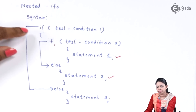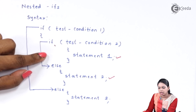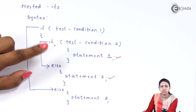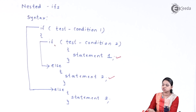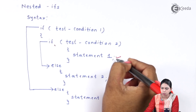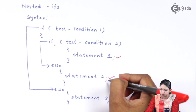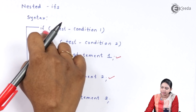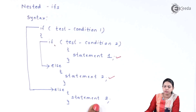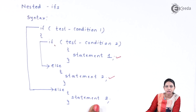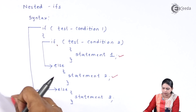To repeat: if test condition 1 is true, you go inside and check whether test condition 2 is true or not. If it is true, you execute statement 1; if it is not true, you execute statement 2. And if test condition 1 is not true, you execute statement 3. We will see this syntax with the help of an example.